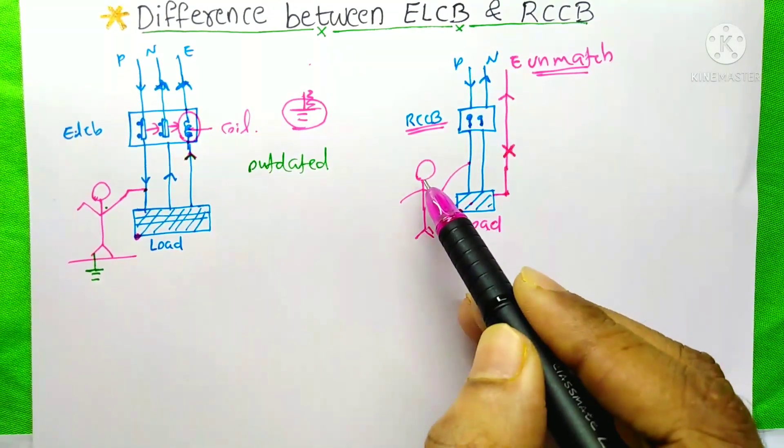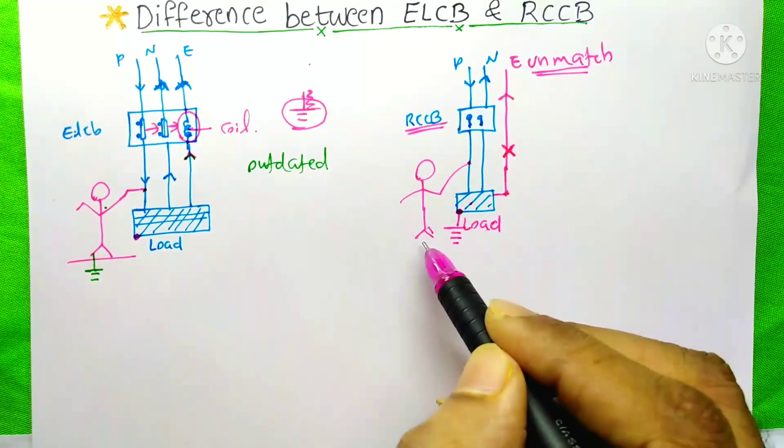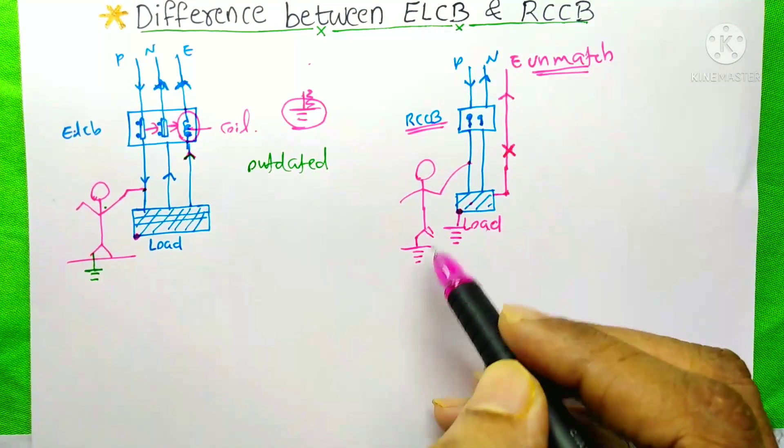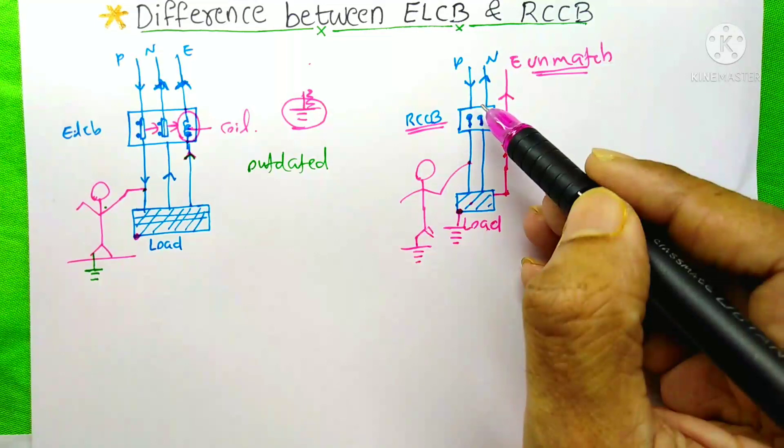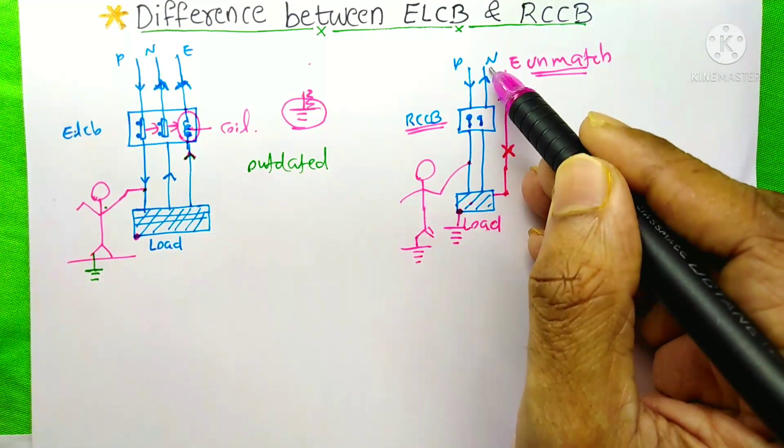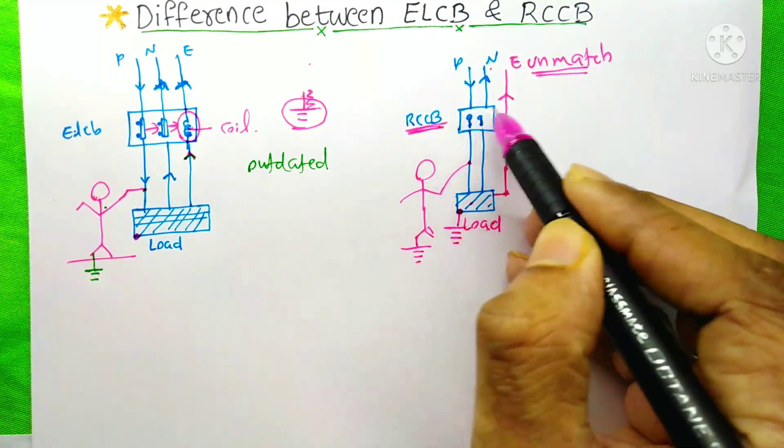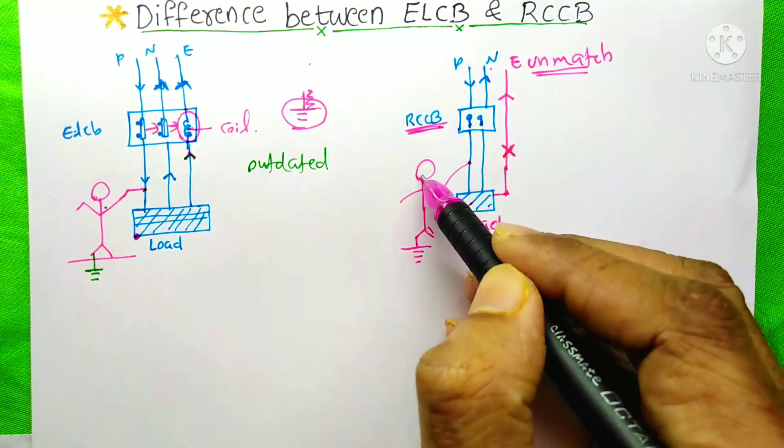Another condition is, if a person touches the phase, then at that time, through his body, the current passes to the earth. At this condition also, the current that comes to this load will not pass through this neutral, and the RCCB will sense that and it will trip the circuit and protect this person.